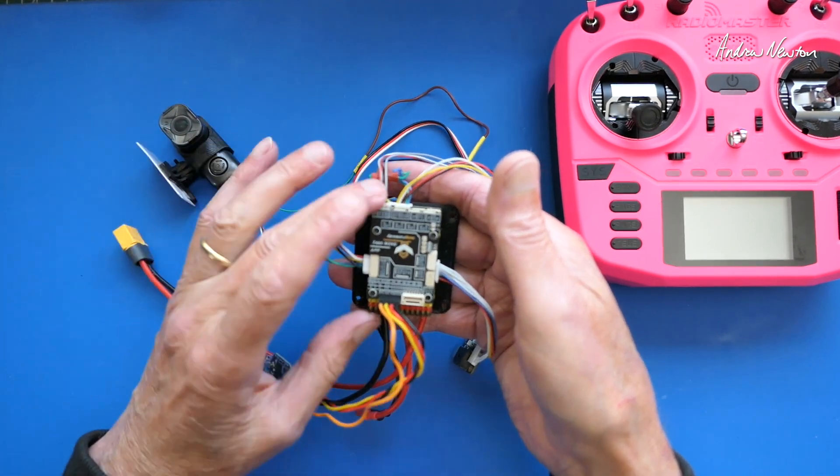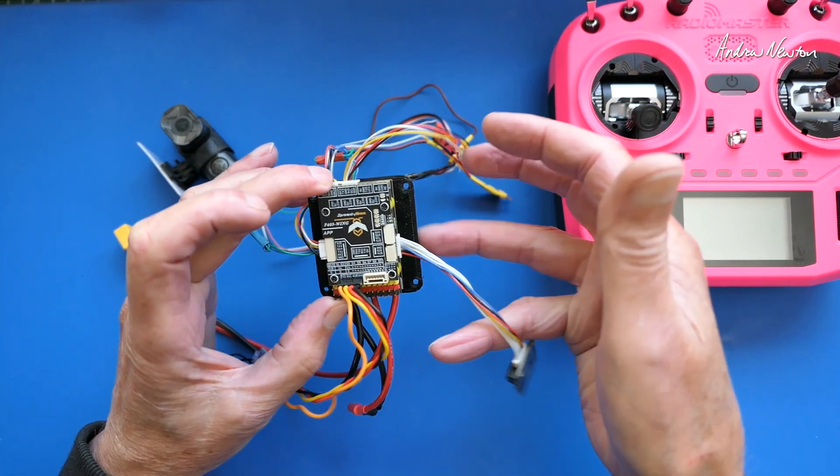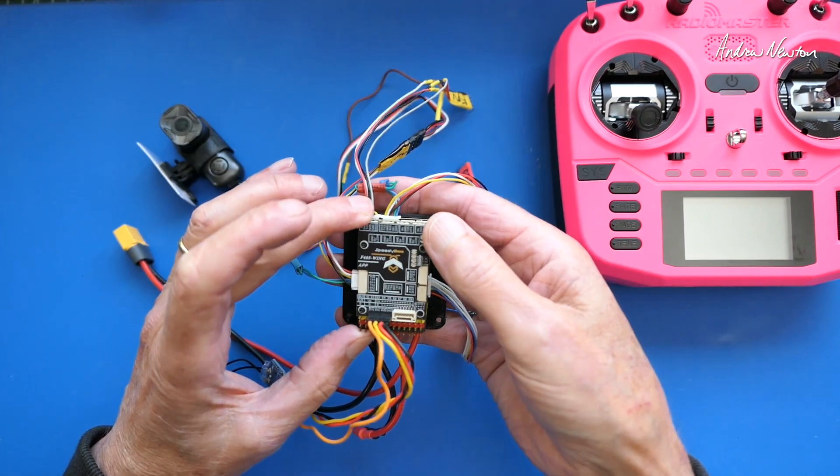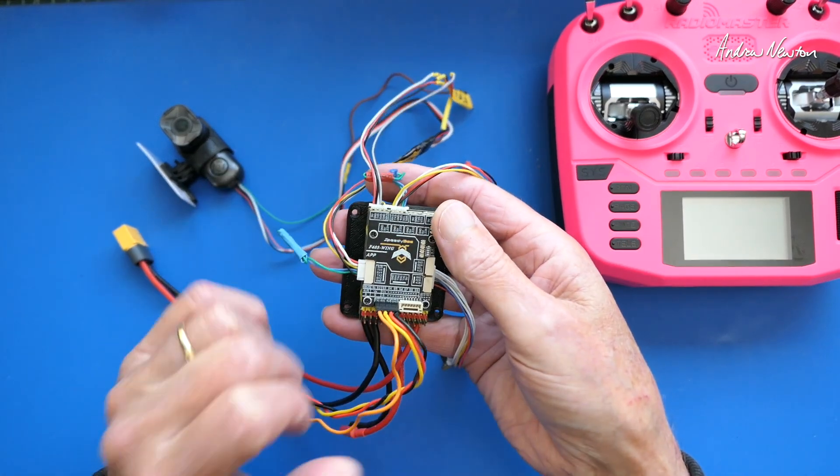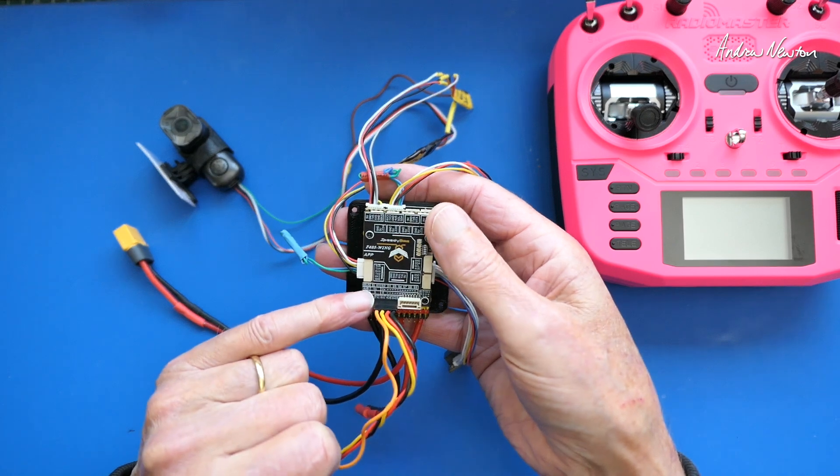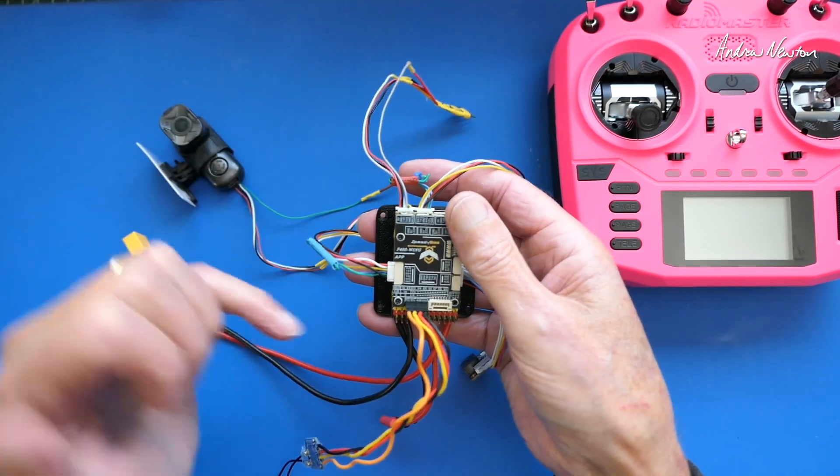All the other UARTs are used for other features like FPV, GPS, and UART1 is used by the ExpressLRS receiver. So UART4 it is, plugged into UART4.